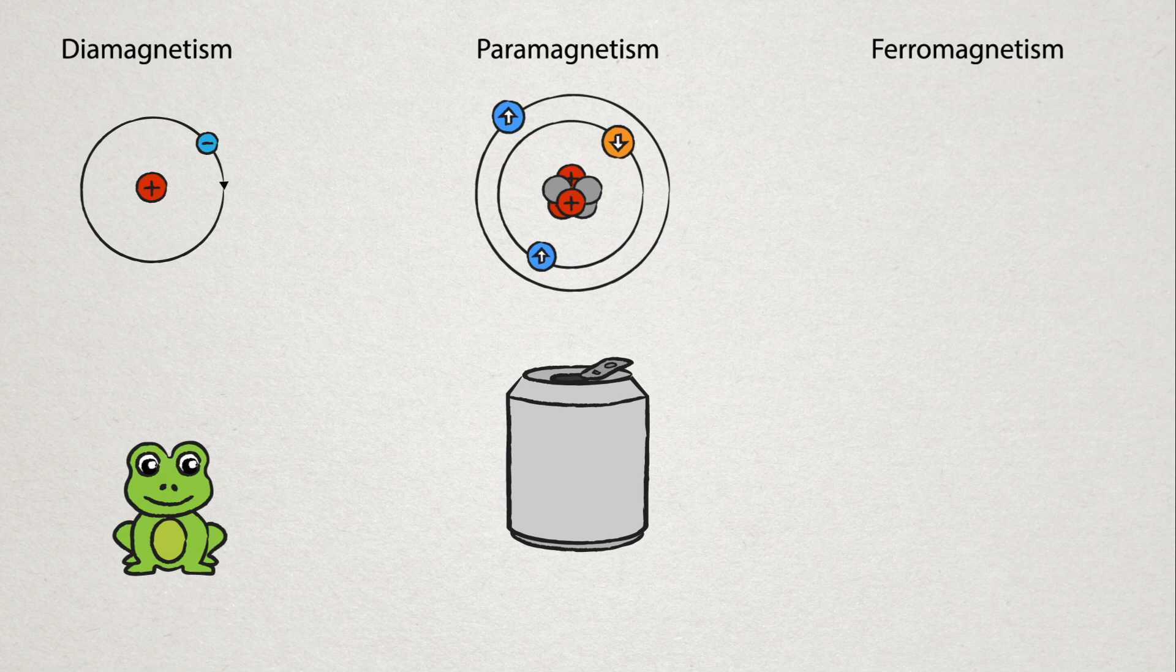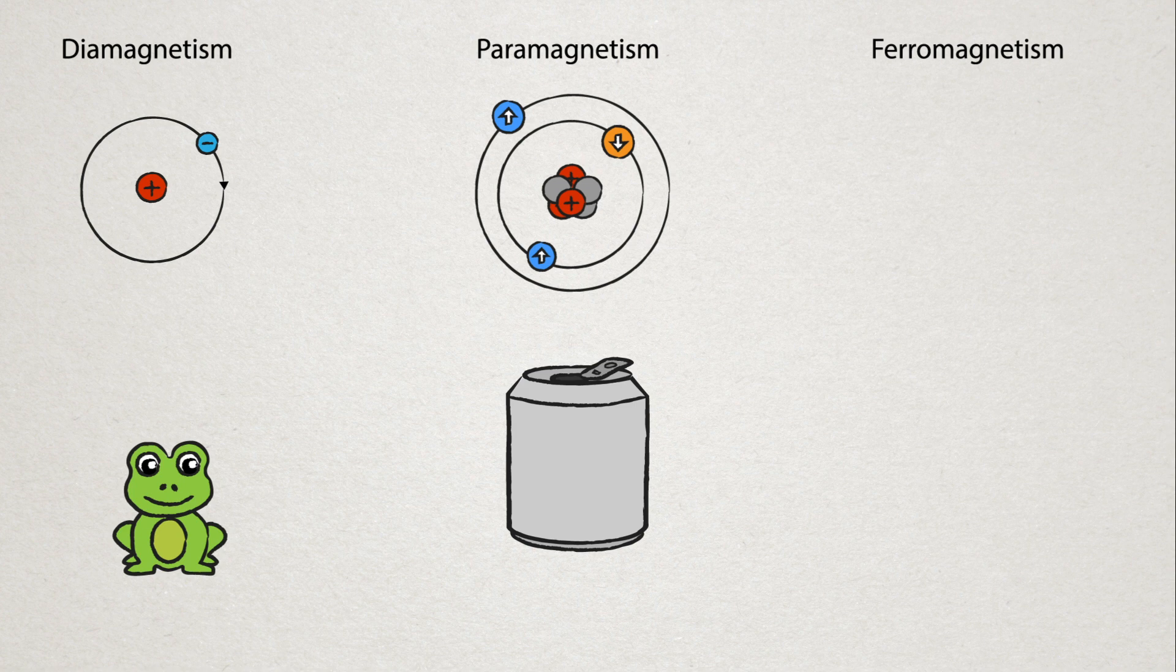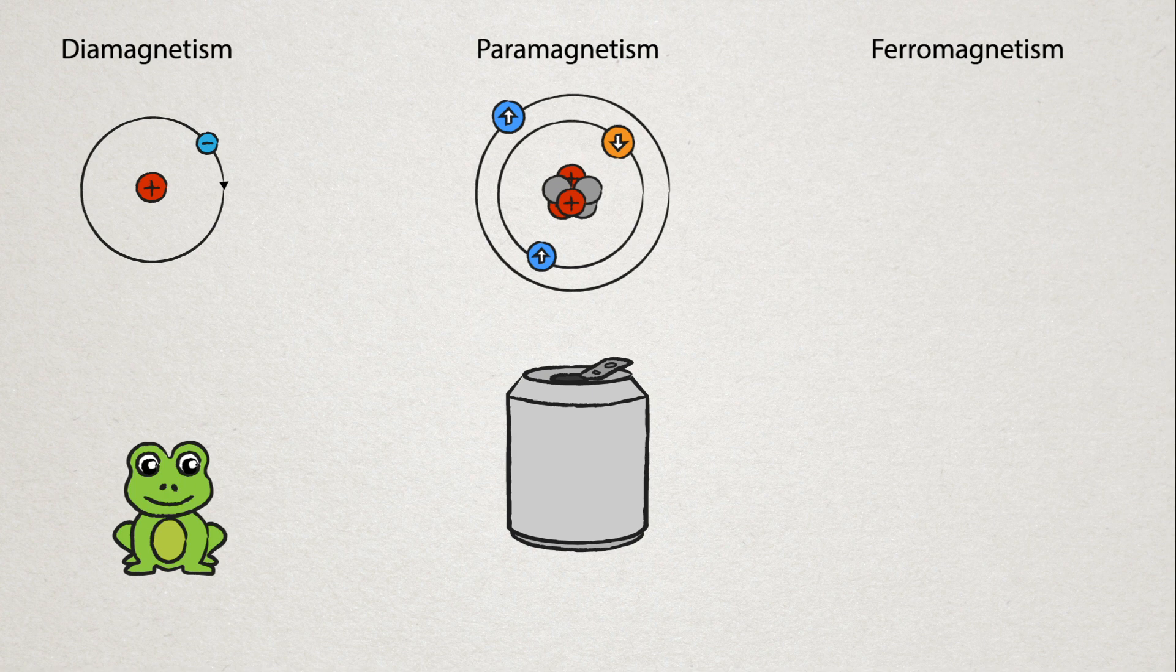But when there is an odd number of electrons, this rogue electron is free to point in whatever direction it so pleases. And as the electron can generate a magnetic field, this gives the atom a magnetic field.